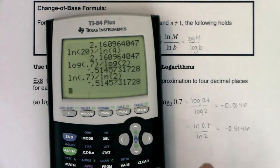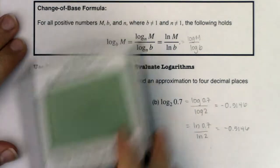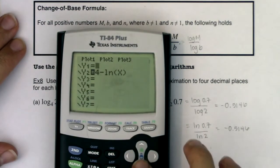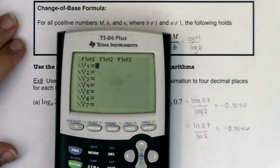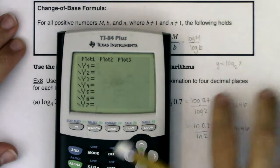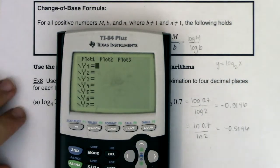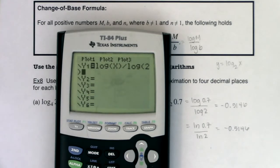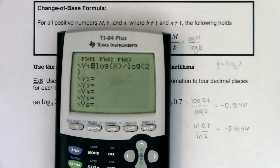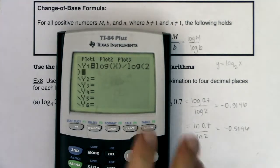So that rounds us out of this section, and I just want to mention that for this change of base, if you ever need to graph something like log base 2 of x, you could rewrite that. If I ever wanted you to graph log base 2 of x on your calculator, and we don't have that log base 2 button, now you can type this in as log of x divided by log of 2, or you could have done ln x over ln 2, and now we can graph those functions.